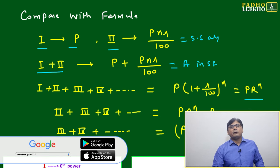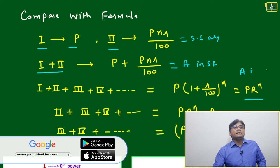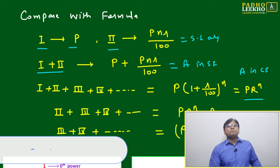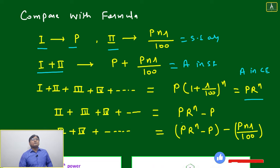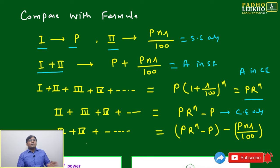It will come P into 1 plus R by 100 to power n, PR to power n. You can say it is the compound amount in compound interest. Now second plus third plus four, that will give you compound interest only, means we are subtracting the principal amount. Third, fourth onward will give you the compound interest minus simple interest, means difference between simple interest and compound interest.